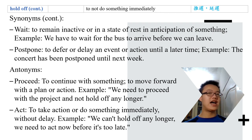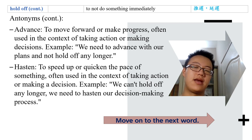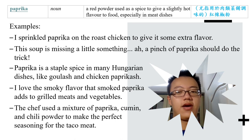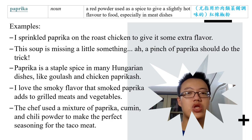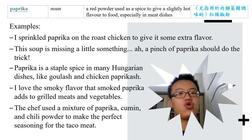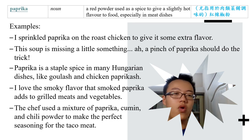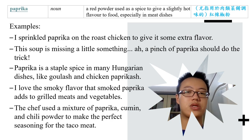Antonyms include: proceed, act, get started, advance, and hasten. We can't hold off any longer — we need to hasten our decision-making process. The next word is 'paprika' — a red powder used as a spice to give a slightly hot flavor to food, especially in meat dishes. I sprinkled paprika on the roast chicken to give it some extra flavor. A pinch of paprika. Paprika is a staple spice in many Hungarian dishes like goulash and chicken paprikash.